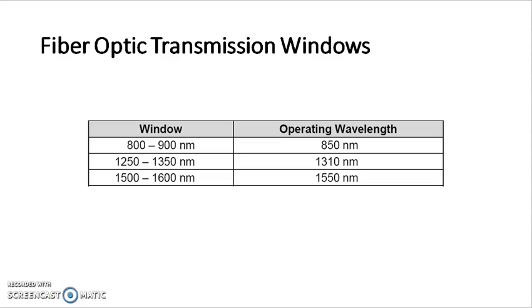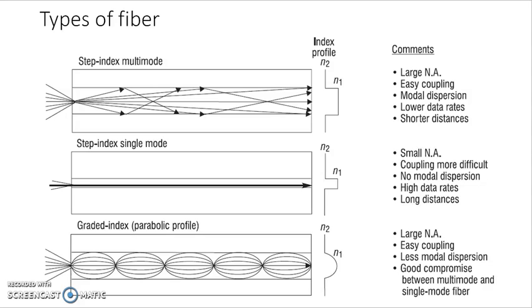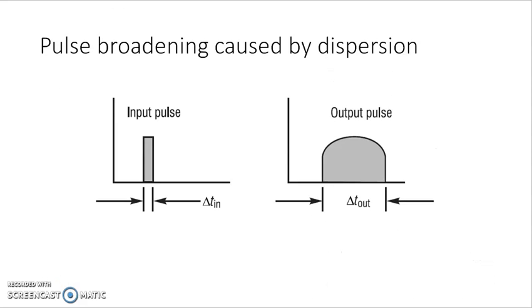Optical fiber has three transmission windows. The first transmission window is 800 to 900 nm with an operating wavelength of 850 nm. The second is 1250 to 1350 nm with an operating wavelength of 1310 nm. The third window is 1500 to 1600 nm with an operating wavelength of 1550 nm. Outside these windows, there will be large attenuation. There are five types of fiber: step index fiber, step index single mode fiber, graded index fiber — single mode and multimode — two types, which can be step index and graded index.